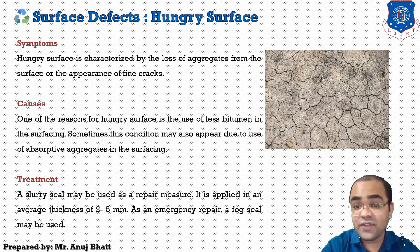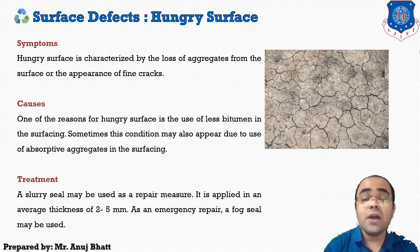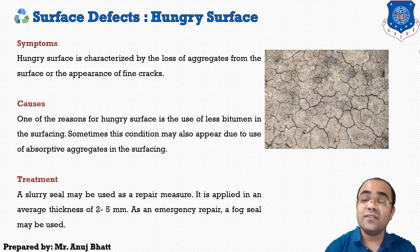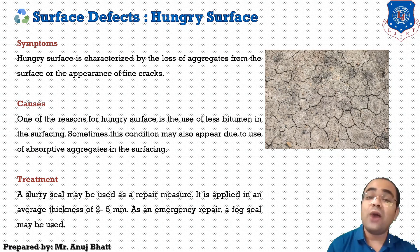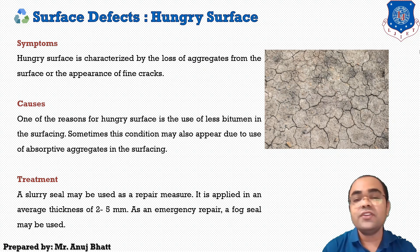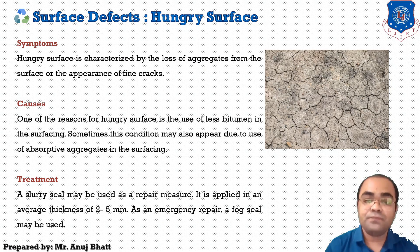One reason for the hungry surface is the use of less bitumen in the surface. Sometimes this condition may also appear due to the use of absorptive aggregates in the surface. For treatment, a slurry seal may be used as a repair measure, applied at an average thickness of 2 to 5 millimeters. As an emergency repair, a fog seal may be used to treat this defect.